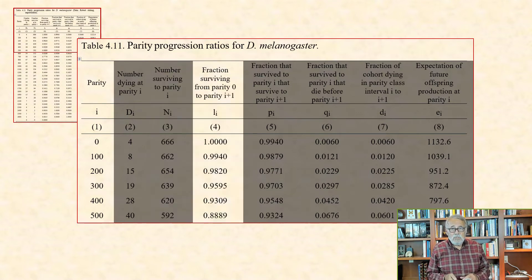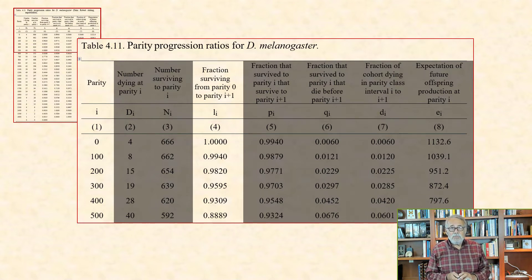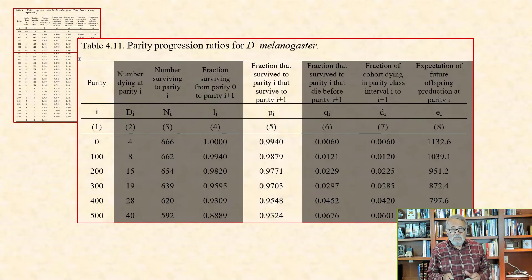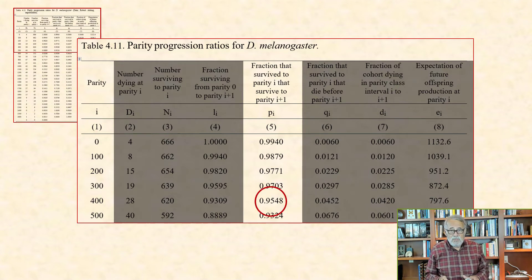Column 4 contains the fraction surviving from parity 0 to parity i. For example, 0.9309 of the original female cohort survived to parity class 400. Column 5 contains the fraction that survived from parity i to parity i plus 1. For example, 0.9548 survived from parity class 400 eggs to parity class 500 eggs.